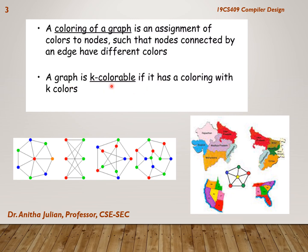The graph is k-colorable if it can be colored with k colors. We have to choose the minimum number of colors. In the same figure, we can use blue again instead of red, so we have to color the graph with 5 colors. This will be a 5-colorable graph.